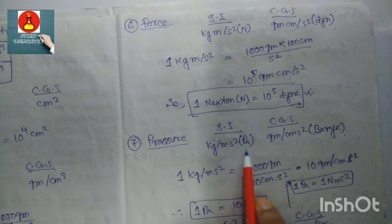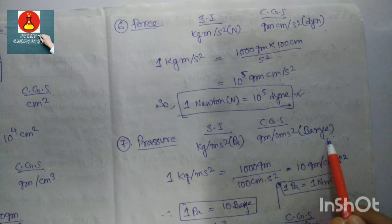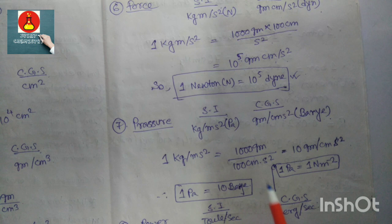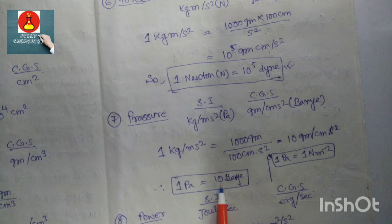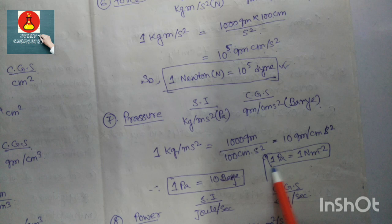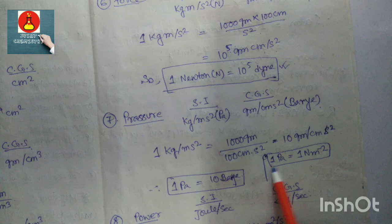Pressure: SI unit is kg/(m·s²) — Pascal — and CGS unit is g/(cm·s²) — barye. One Pascal equals 1000 g divided by 100 cm times s², which equals 10 g/(cm·s²). So 1 Pascal equals 10 barye. Also, 1 Pascal equals 1 Newton per meter squared, or N·m⁻².